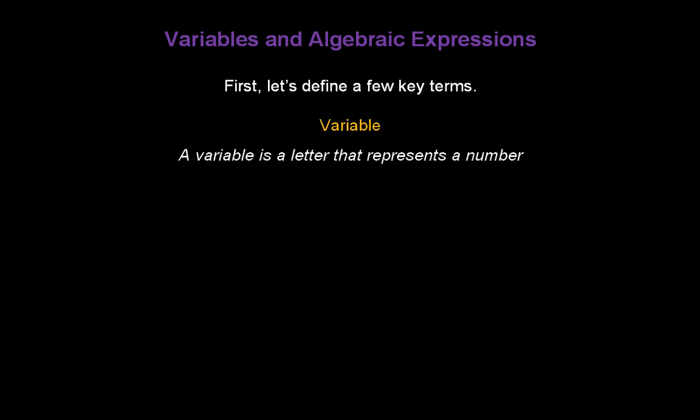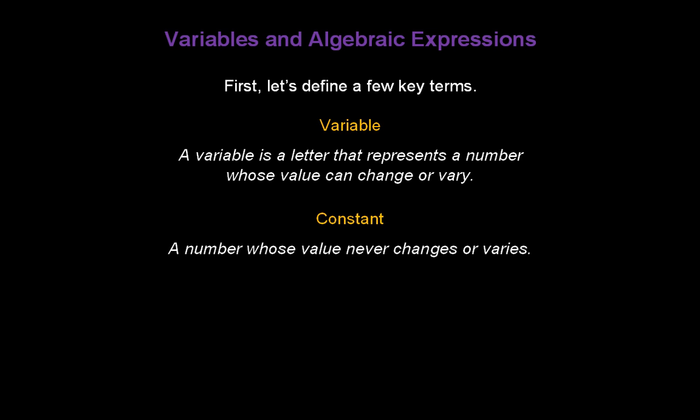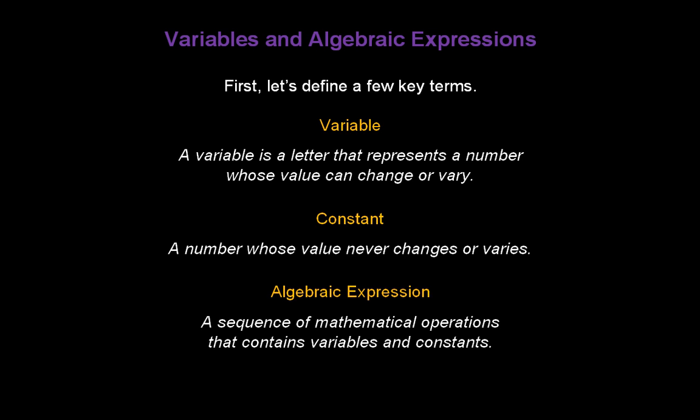The word variable — a variable is just a letter that represents a number whose value can change or vary. The word constant — that's a number whose value never changes or varies; it's always the same. The term algebraic expression means a sequence of mathematical operations that contains variables and constants.